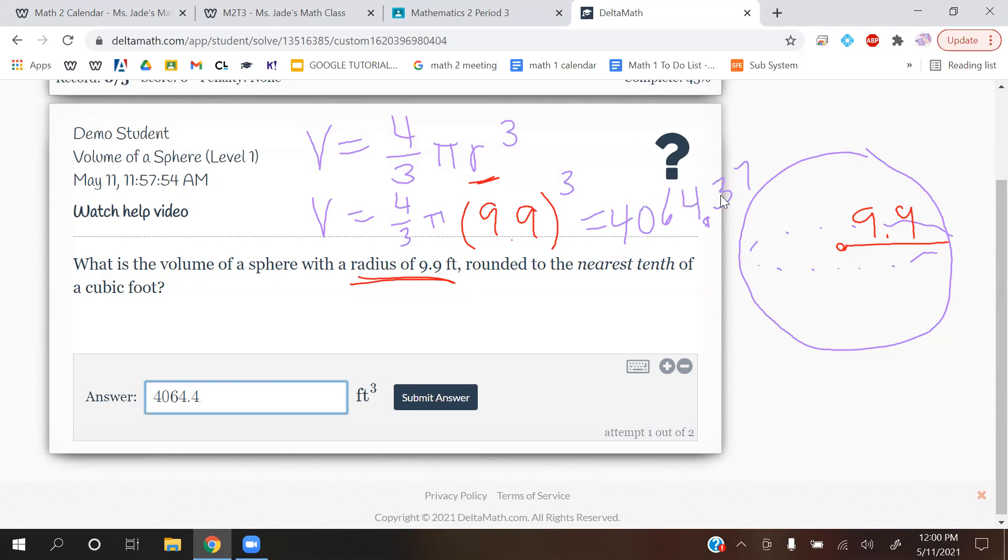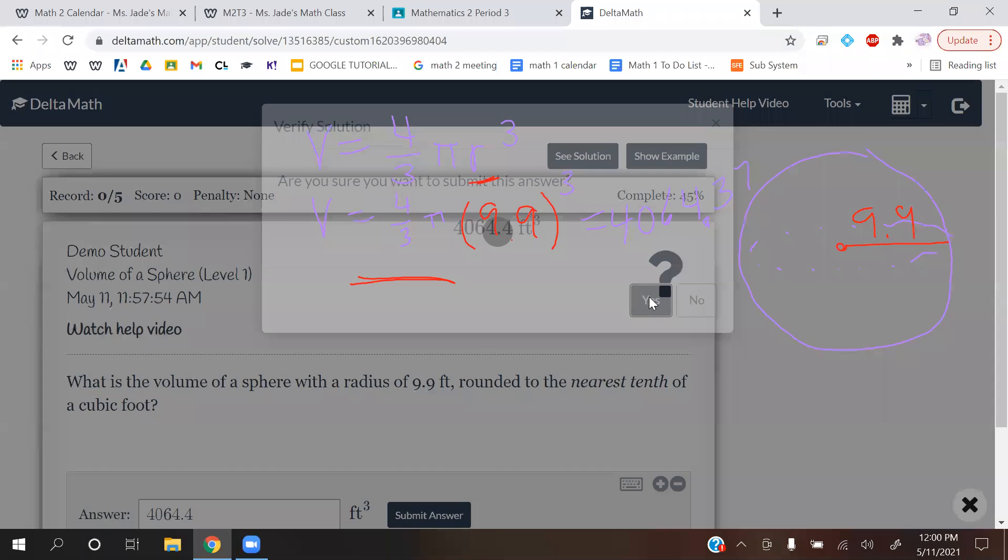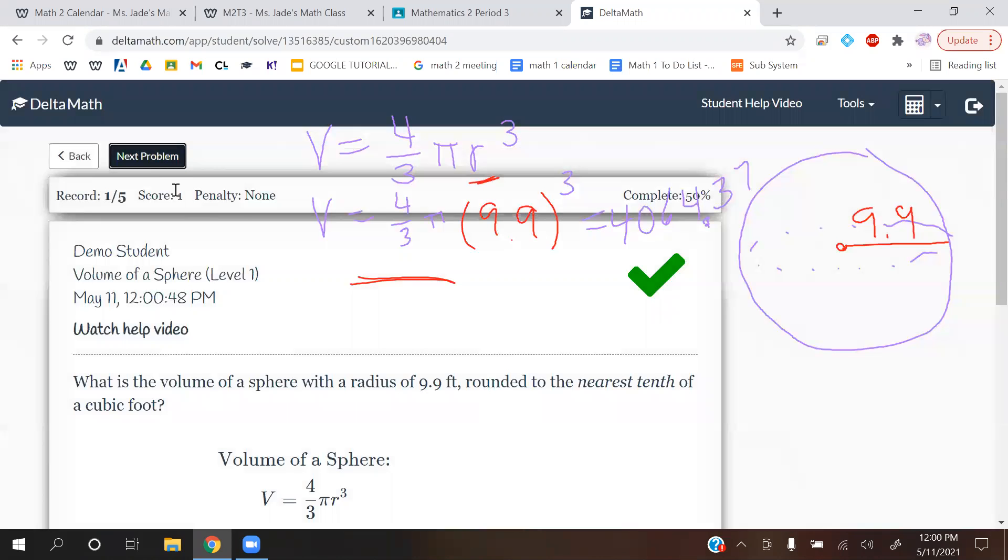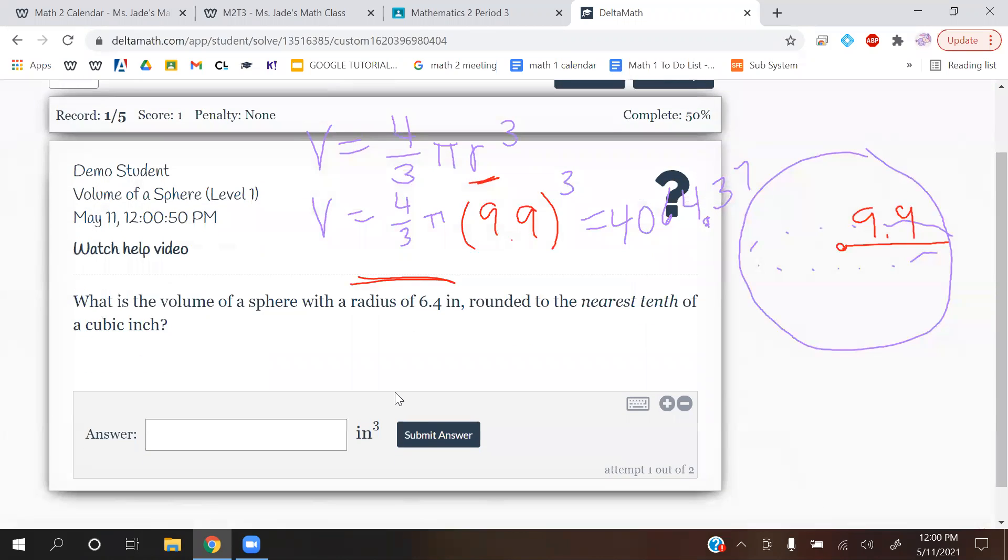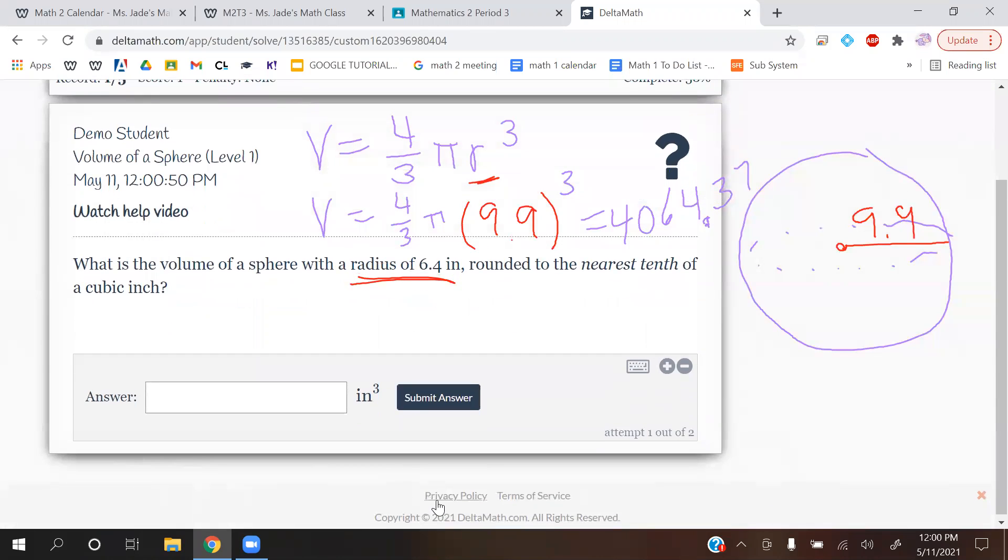3 became a 4 because of the 7. 7 is a big number that came after it. Alright, let's do another couple examples. I believe they might give us a diameter, but I'll do this one first.